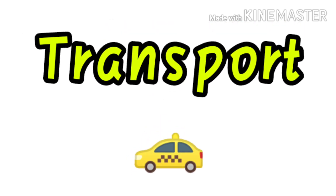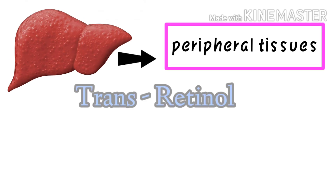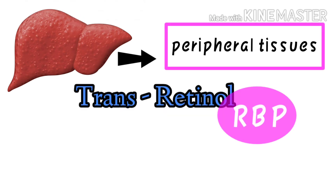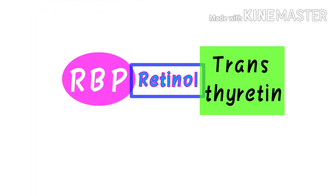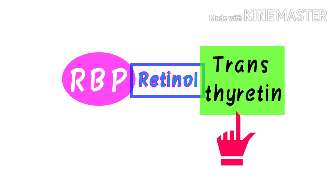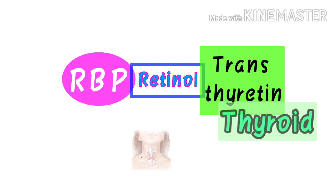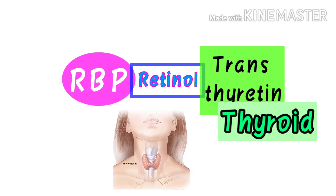Transport: Vitamin A from the liver is transported to peripheral tissues as transretinol by the retinol binding protein, or RBP. Actually it's a ternary complex — a tri-molecular complex — formed by RBP, retinol, and transthyretin. Transthyretin also transports thyroid hormone, as its name indicates.